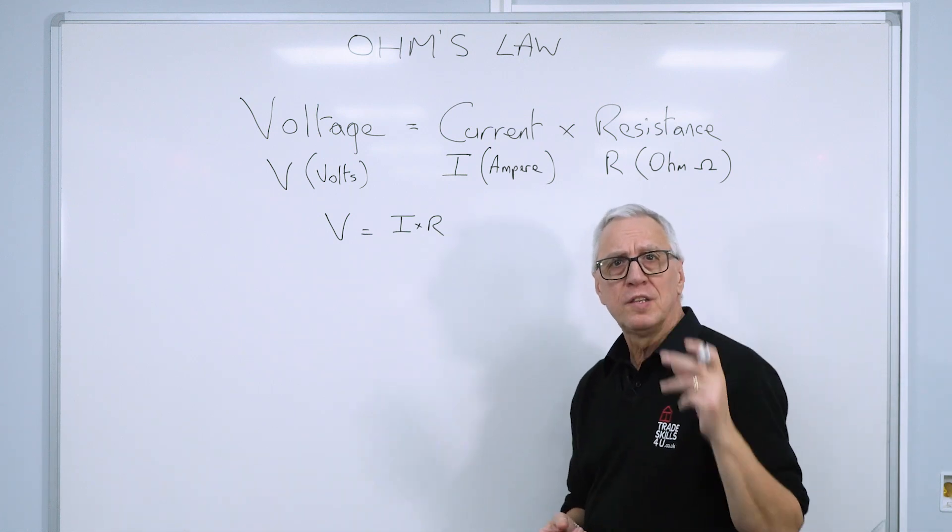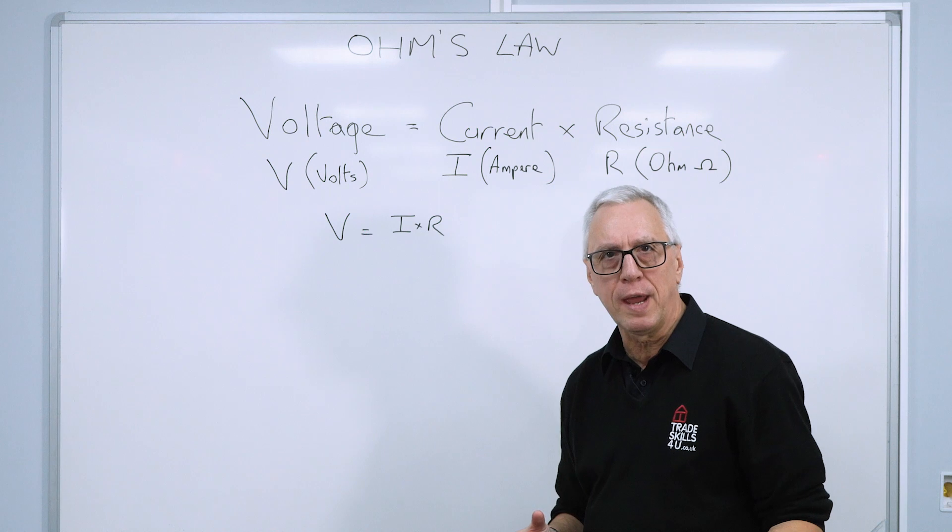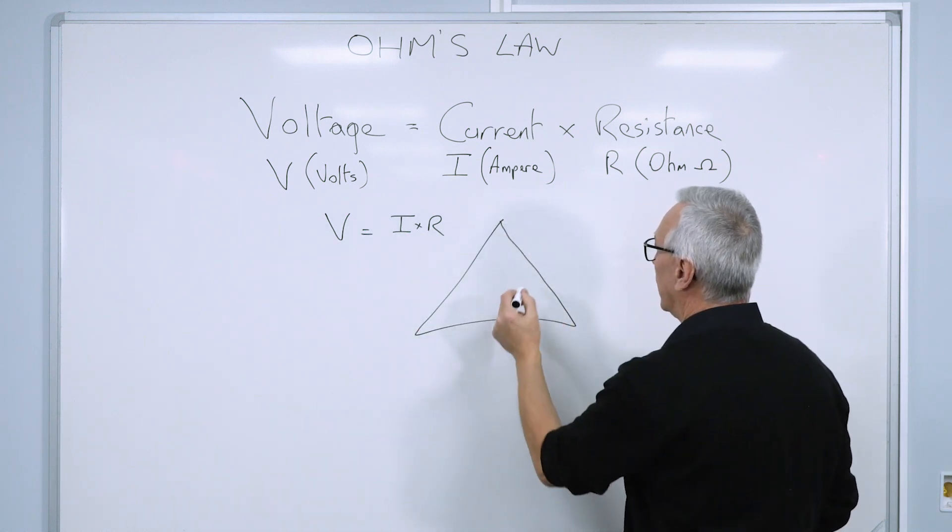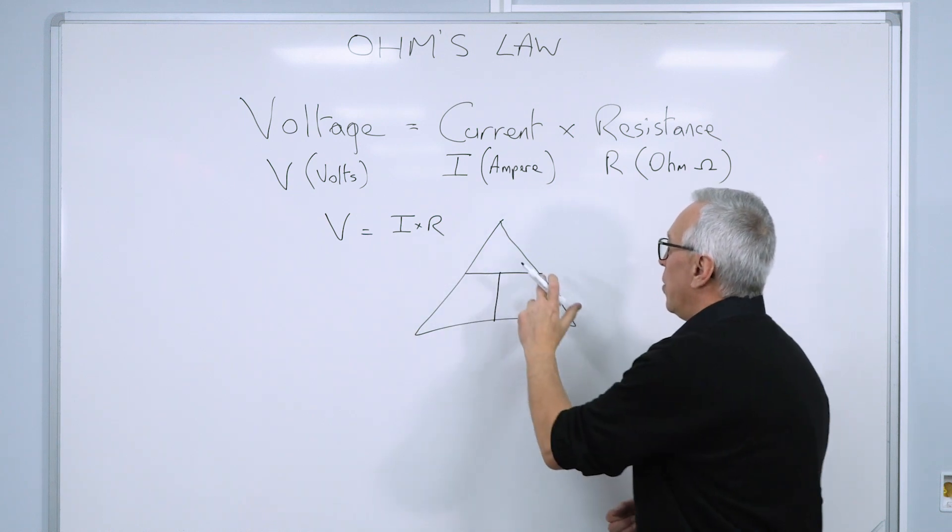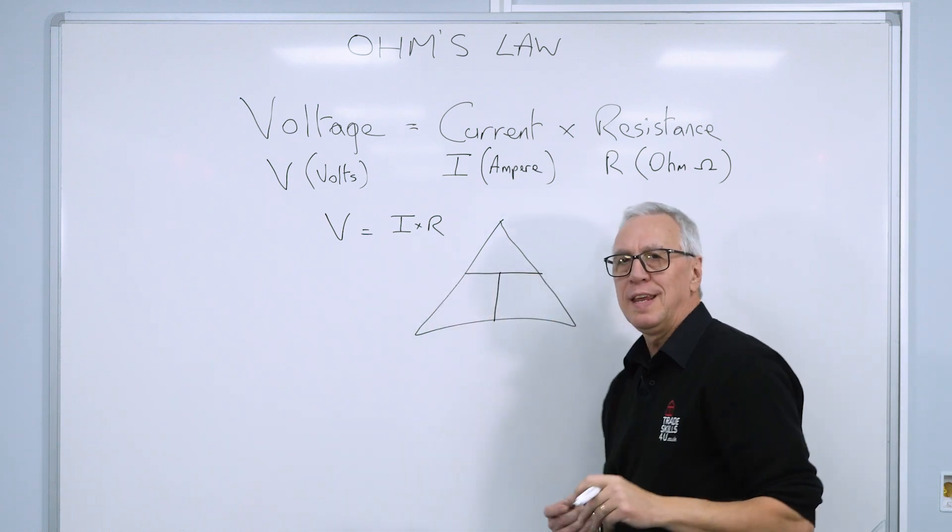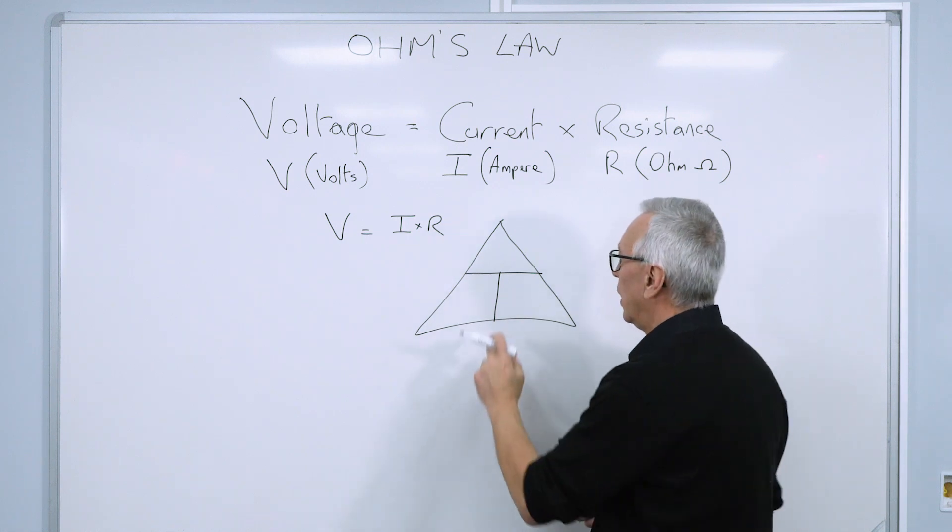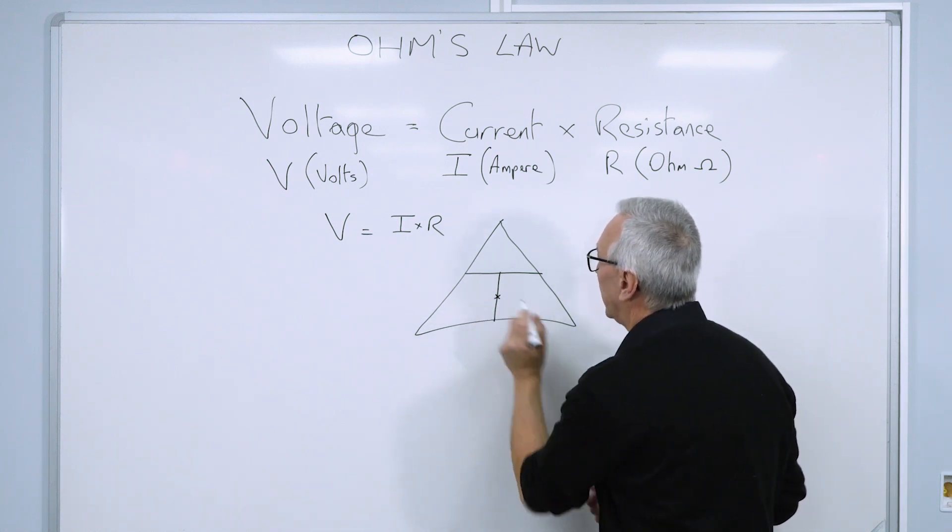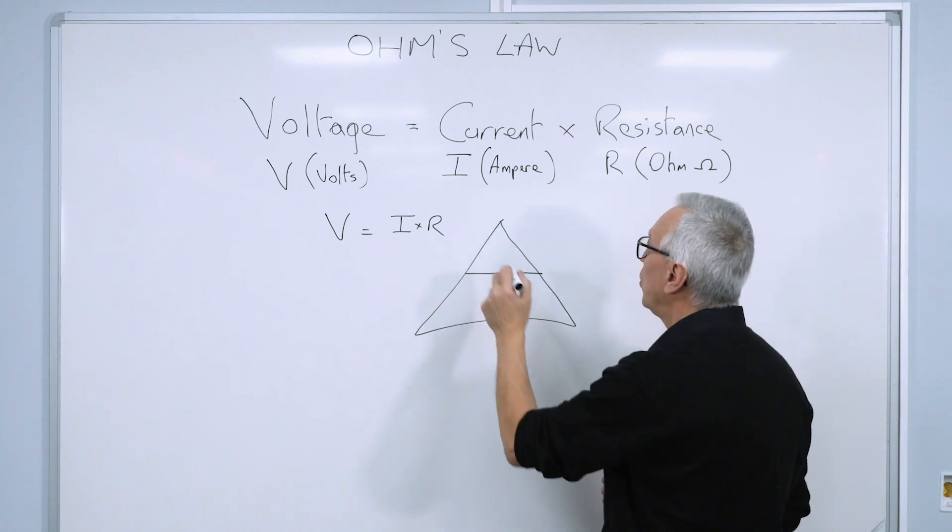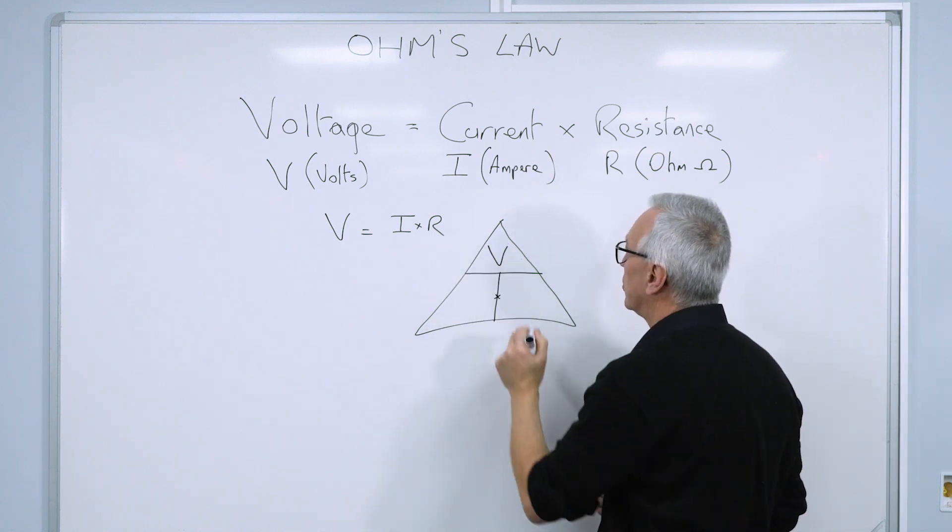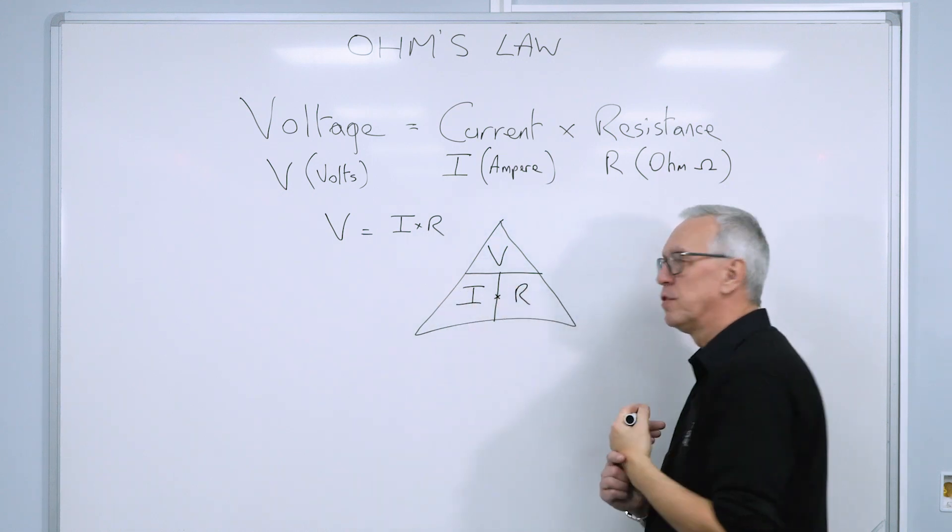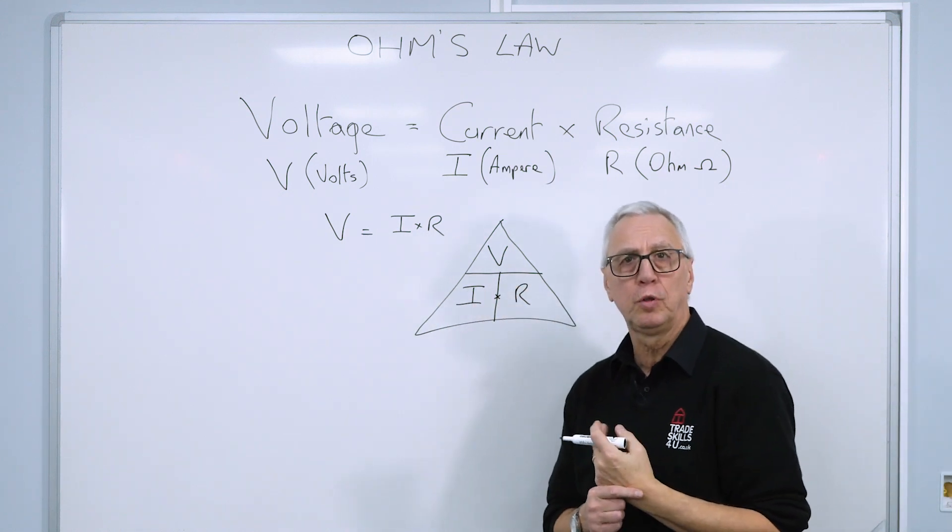A good way of remembering this is to use what we call a T-triangle. So if we draw a triangle and we put a T in here, this line is representing a division. And the elements down here, you can imagine there's a little multiplication between them. And what you do is we put the voltage at the top, we put the current there, and we put the resistance there. That's called the Ohm's law triangle.